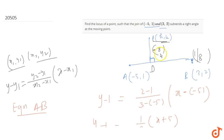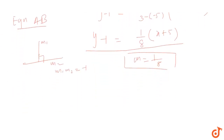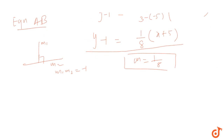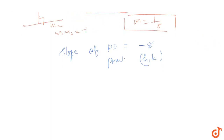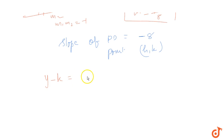We have the slope of line PD equal to minus 8 and the point P(h, k). We can now find the equation of line PD using the point-slope form: y minus k equals minus 8 times (x minus h).